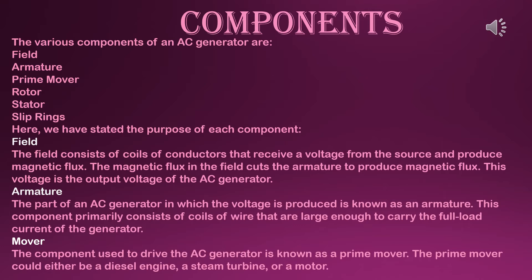The prime mover is the component used to drive the AC generator. It could either be a diesel engine, a steam turbine, or a motor. In your book, the diagram and description of components are shown according to the diagram. Here I have given additional information because there is no need to draw the diagram in the exam — this is not in your syllabus — but I have given you the diagram for easier explanation.